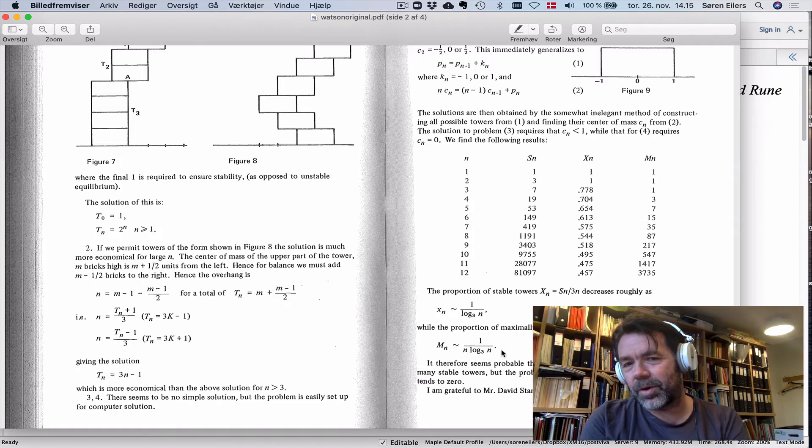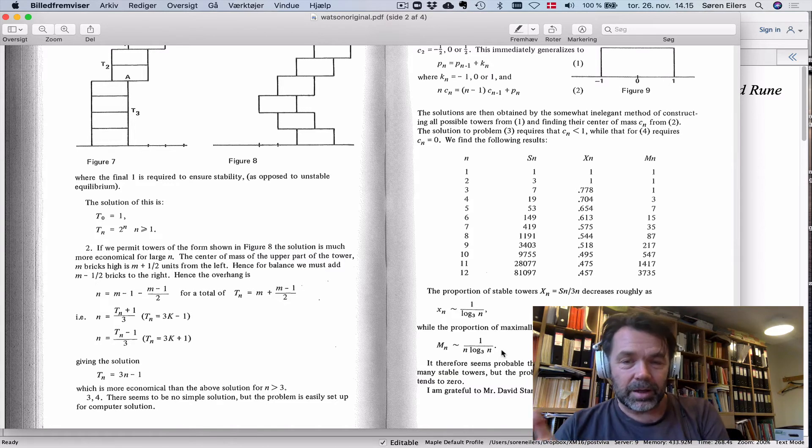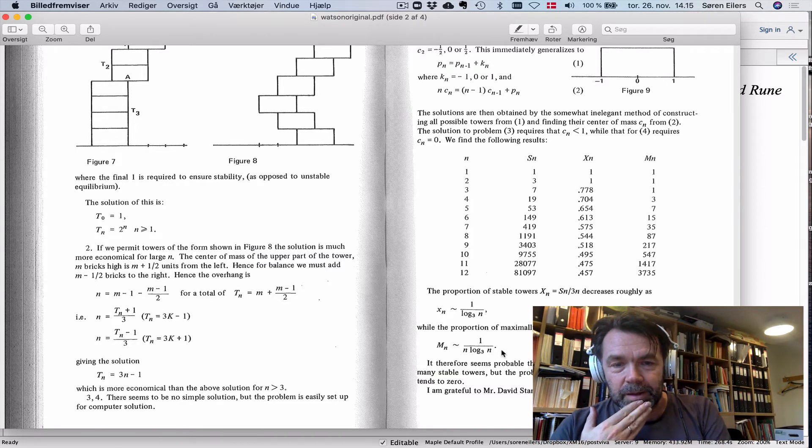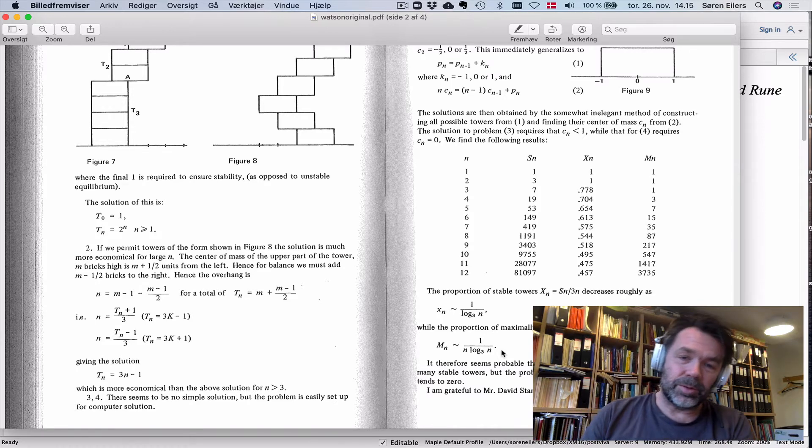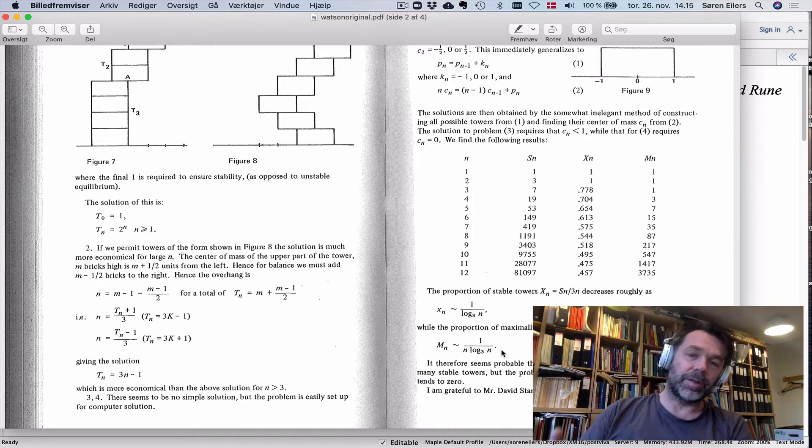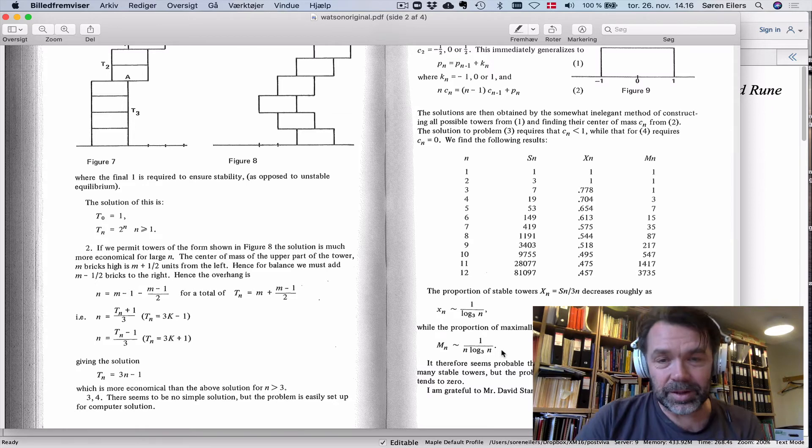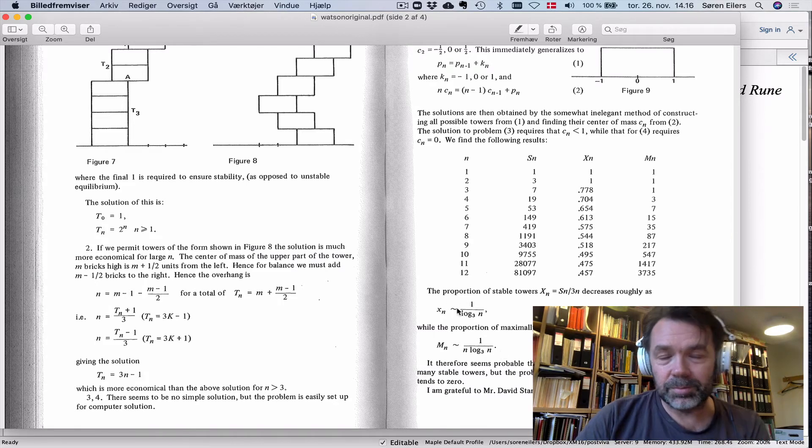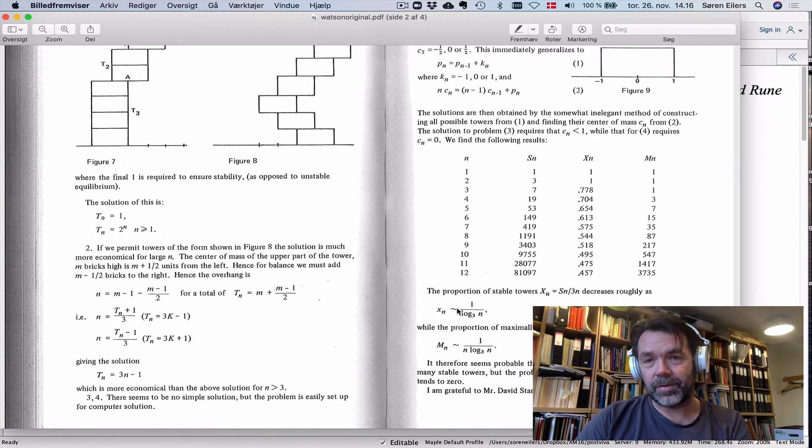The reason this is annoying is that all logarithms are proportional. It doesn't really matter what logarithm you took; it would be much more natural to take the natural logarithm. The difference is just a constant, and you have that constant anyway in the proportion part of the conjecture.